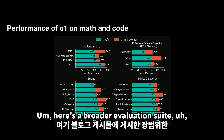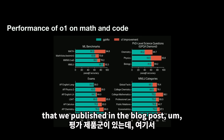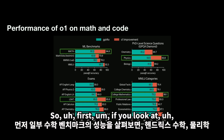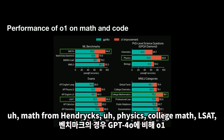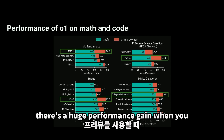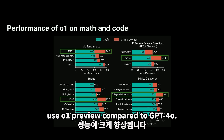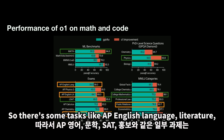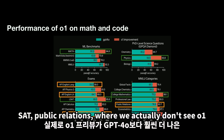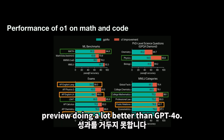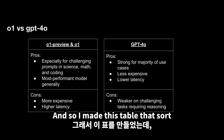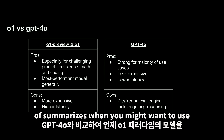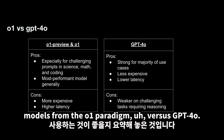Here's a broader evaluation suite that we published in the blog post. If you look at performance on math benchmarks — MATH from Hendrycks, physics, college math, LSAT — there's a huge performance gain when you use O1 preview compared to GPT-4o. Conversely, you don't get a huge performance gain for every task. For tasks like AP English language, literature, SAT, and public relations, we don't see O1 preview doing a lot better than GPT-4o. I made a table that summarizes when you might want to use models from the O1 paradigm versus GPT-4o.